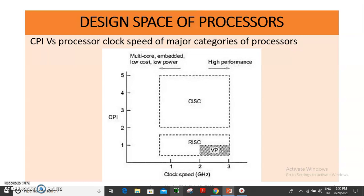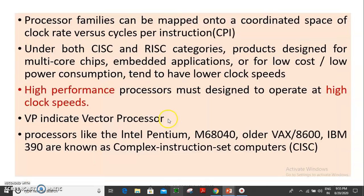Examples of CISC processors include Intel Pentium, M68040, VAX Computers, and IBM 390. The clock rate of CISC processors is typically many GHz or a few GHz. We use CISC processors for high-performance workloads.